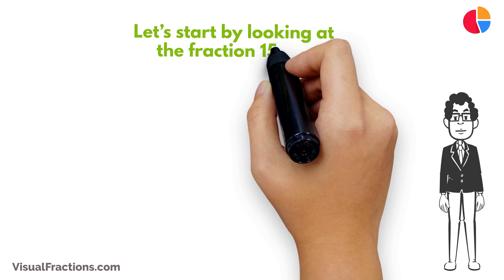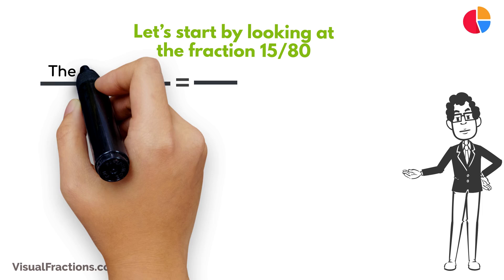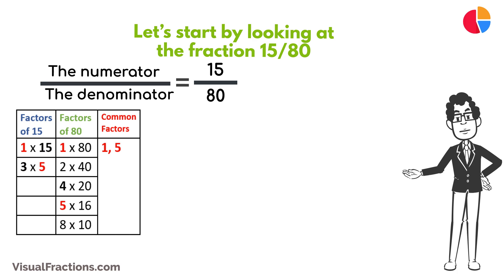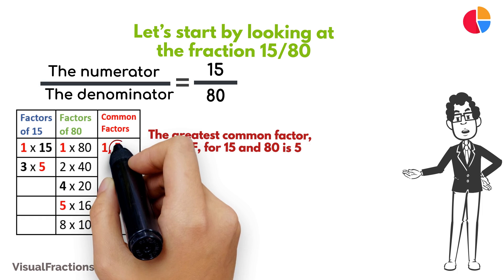Let's look at the fraction 15/80. To simplify it, we'll divide both the numerator and the denominator by their greatest common factor. The greatest common factor, or GCF, for 15 and 80 is 5.